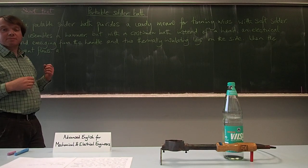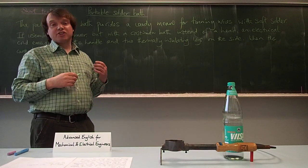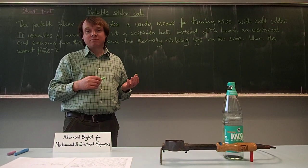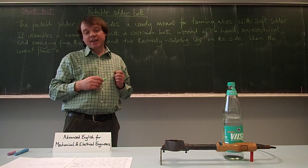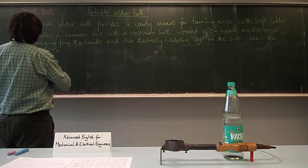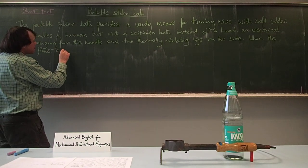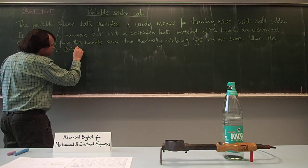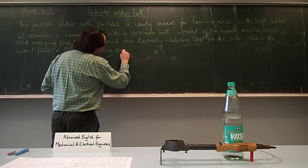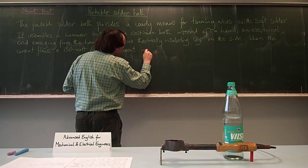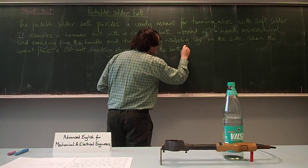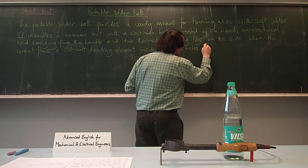Now here it might be good to say something about the nature of the heating element. Things that you could mention are perhaps the material or the power. I think I'm going to mention the power here, because it's quite a lot more than you'd have in a regular soldering iron. It's 130 watts. So I'm going to say: When the current flows, a 130 watt heating element inside the bath, which we've already mentioned, melts the solder.